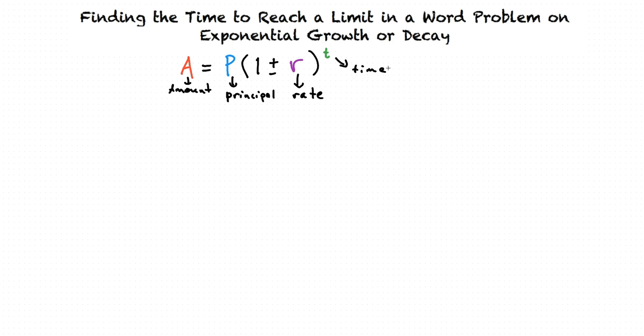If the interest is increasing, then it is written as 1 plus R, but if the interest is decreasing, then it is 1 minus R inside the parentheses. This information will usually be given in the problem.